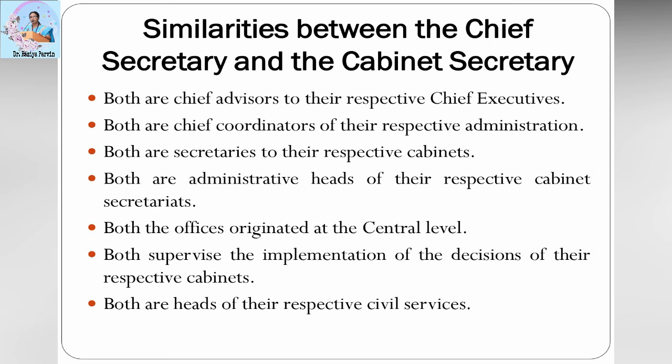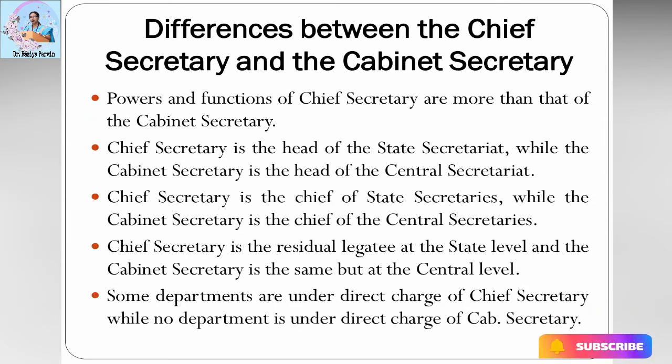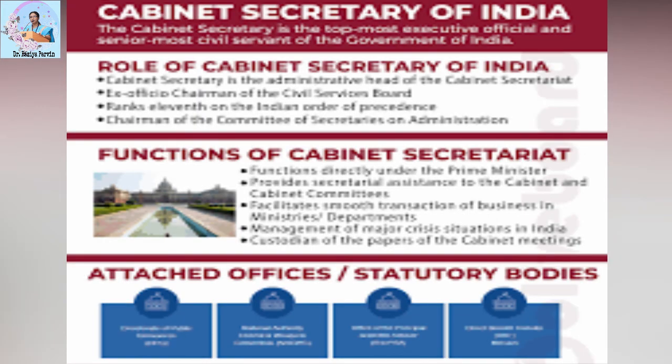We shall also look into the differences between them. The powers and functions of the chief secretary are more than that of the cabinet secretary. The chief secretary is the head of the state secretariat, while the cabinet secretary is the head of the central secretariat. The chief secretary is the residual legatee at the state level, and the cabinet secretary is the same but at the central level. Some departments are under the direct charge of the chief secretary, while no department is under the direct charge of the cabinet secretary.